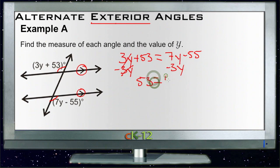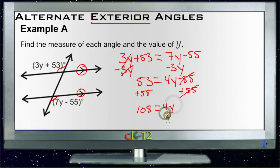We'll add 55 to both sides. That'll cancel and we'll have 108 equals 4y. Divide both sides by 4. Fours cancel and we end up with y equals 108 divided by 2 would be 54, 54 divided by 2 would be 27.